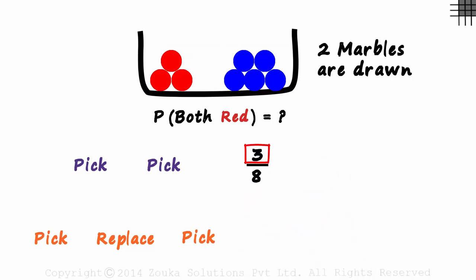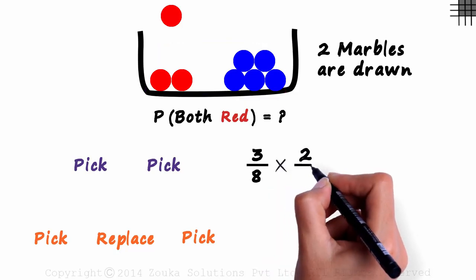Three red marbles and eight in total. Now one red marble is picked. What is the probability of the second one being red? Look at what's remaining in the box. Two red marbles and seven in total. So we multiply this with 2 over 7.